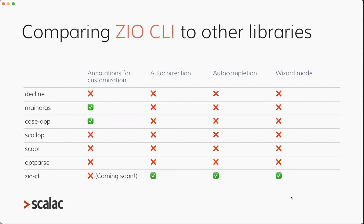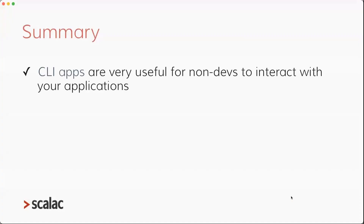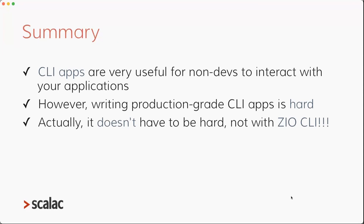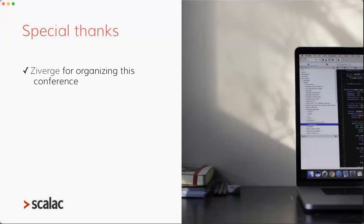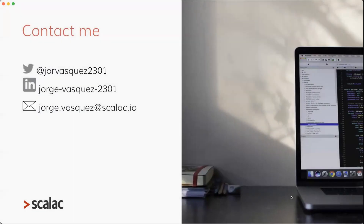In summary: CLI apps are very useful for non-developers to interact with your applications. However, writing production-grade CLI apps is hard — there are many things to consider. But it doesn't have to be hard — not with ZIO CLI. You have lots of features out of the box, and that's what's awesome about this library. Special thanks to Scalar for organizing this conference, ScalaC for sponsoring, and John De Goes for support and guidance as always. Thank you for attending today.